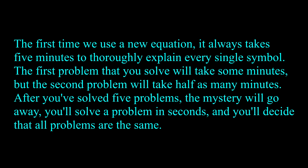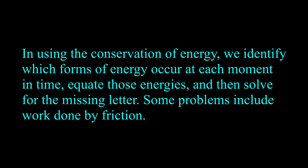The first time we use the new equation, it always takes five minutes to thoroughly explain every single symbol. The first problem you solve will take some minutes, but the second will take half as many. After you've solved five problems, the mystery will go away, you'll solve a problem in seconds, and you'll decide that all problems are the same. In using the conservation of energy, we identify which forms of energy occur at each moment in time, equate those energies, and then solve for the missing letter.